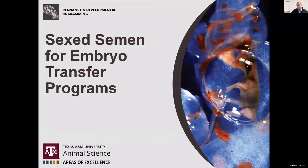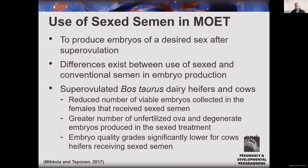Shifting to the use of sexed semen in embryo transfer programs: for in vivo or MOET programs, the goal is to increase the number of embryos of a desired sex after superovulation. What we know is that there are differences between sexed and conventional semen in MOET. Across Bos taurus and Bos indicus animals, studies have noticed a reduced number of viable embryos, a greater number of unfertilized ova, and a decrease in quality grades of embryos when using sexed semen.